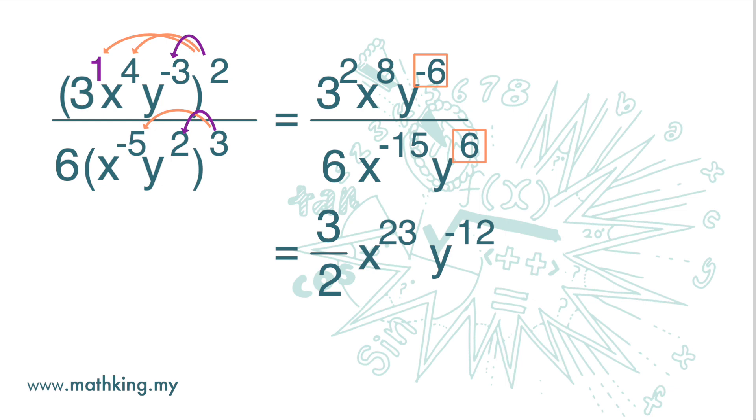And that can be written as 3x to the power of 23 over 2y to the power of 12.